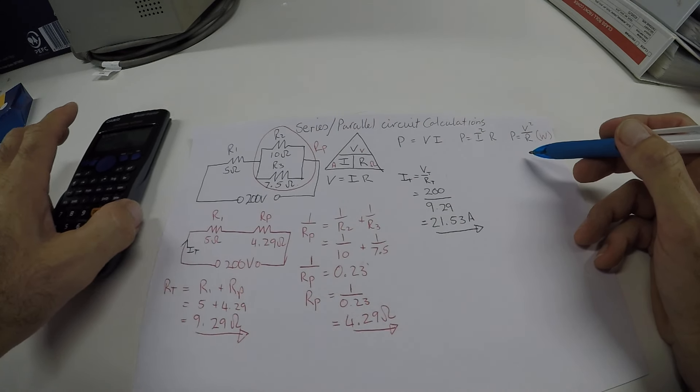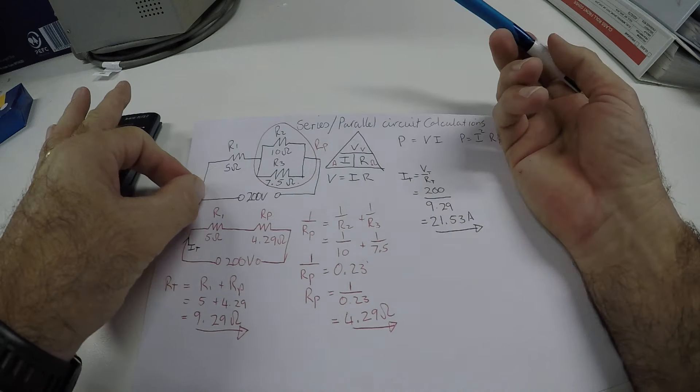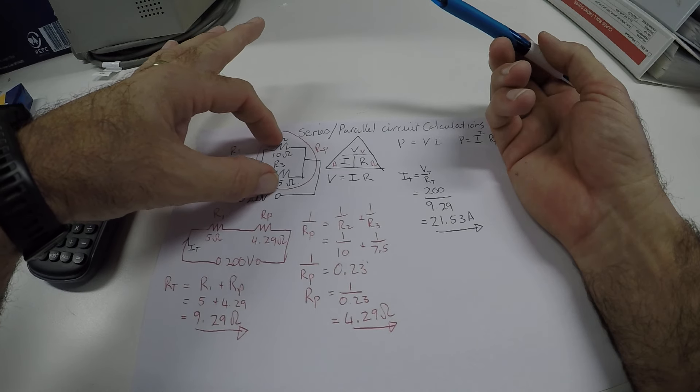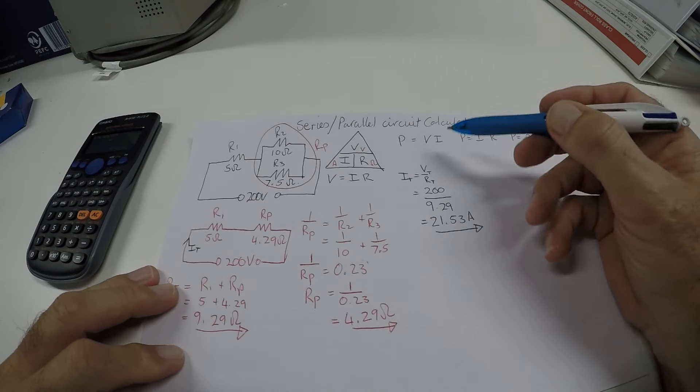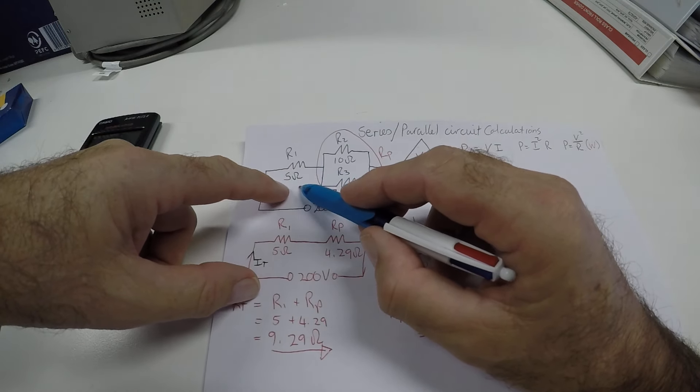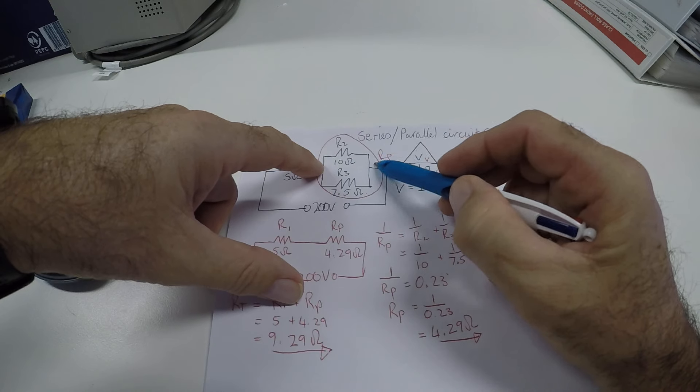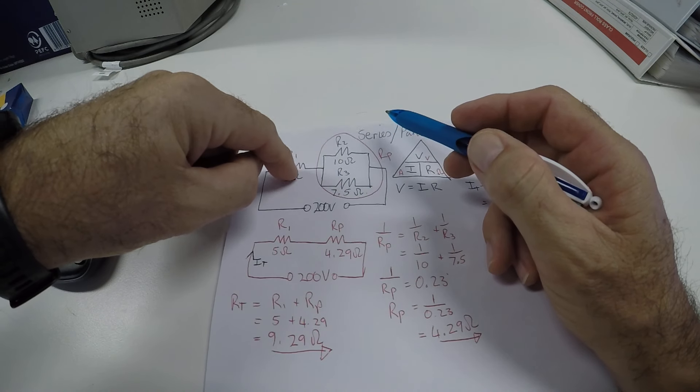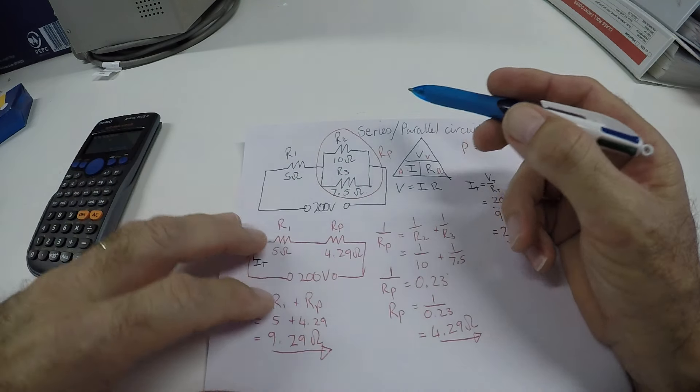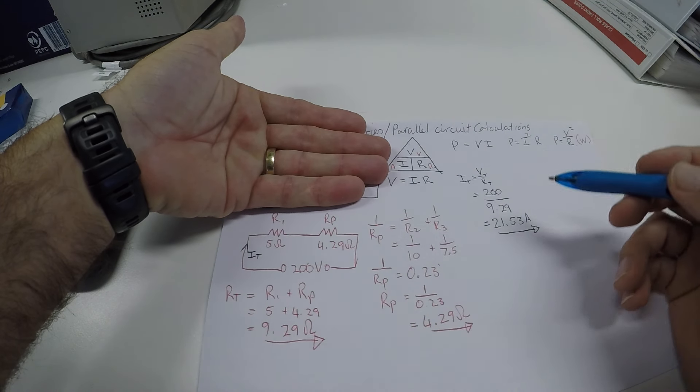So now I have the total current for this circuit. Now usually they want to know what the current will be in resistor 2 and 3. Because remember this 21.53 will go through resistor 1 and then it will split. But I can't calculate it yet because I don't have the voltage for this. We need to understand that there will be a voltage drop over this resistor and there will be a voltage drop over these two. Which if I add this voltage and this voltage together, I should have 200 volts. So we can't calculate yet. So we are still going to focus on this drawing.